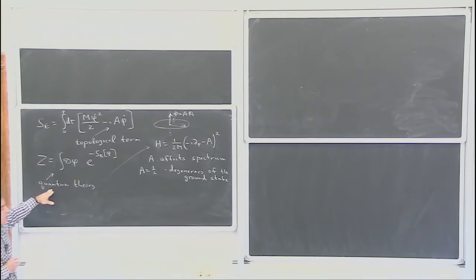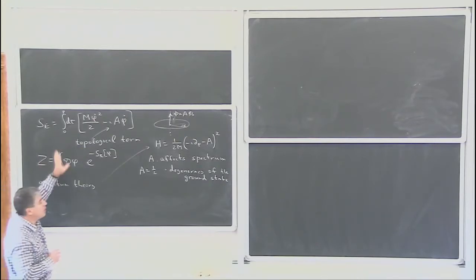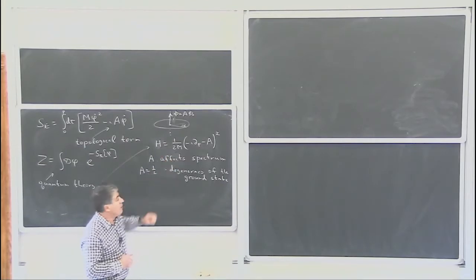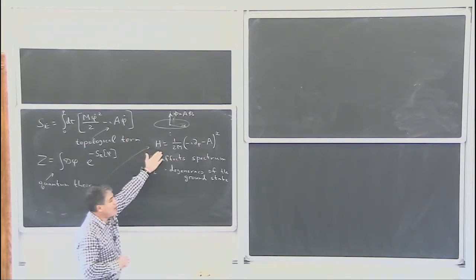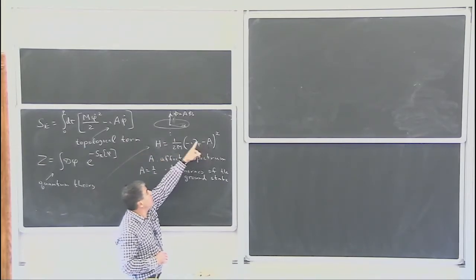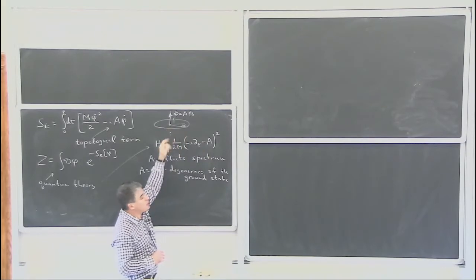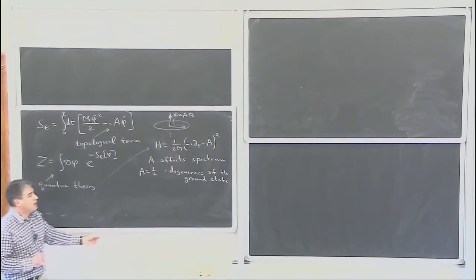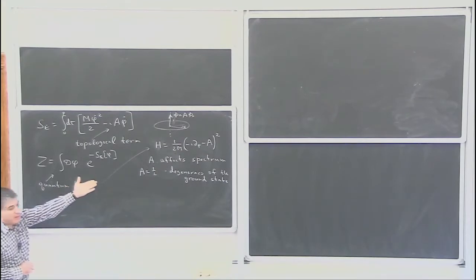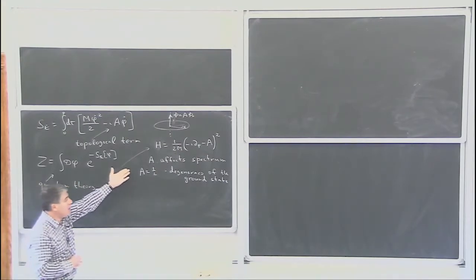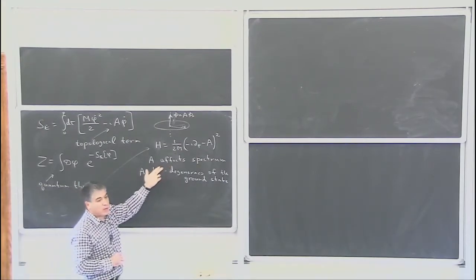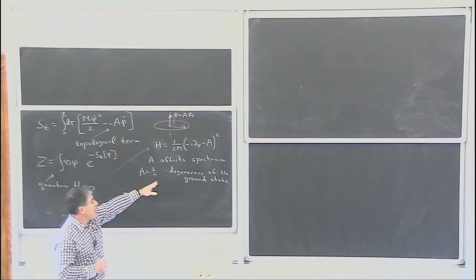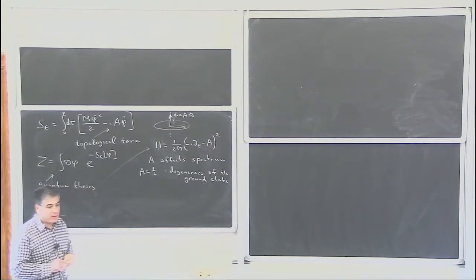Now we talk about quantum theory in Hamiltonian formulation. The flux A through the ring of magnetic field enters the Hamiltonian explicitly and affects the spectrum, as we saw in the pictures. In particular, for A equals one-half, we have degeneracy of the ground state.